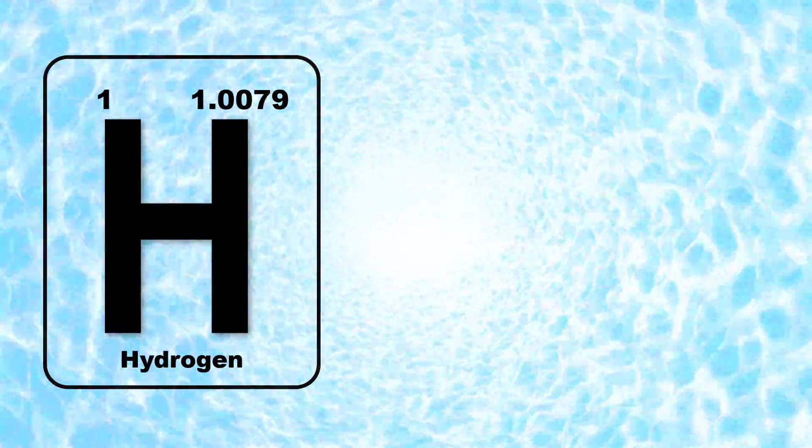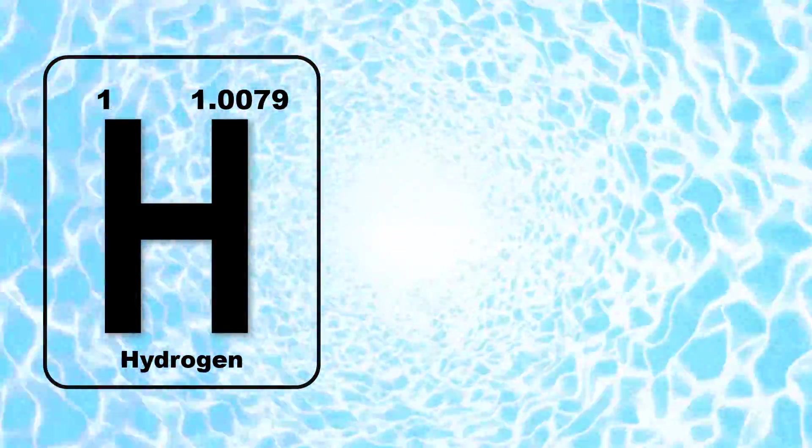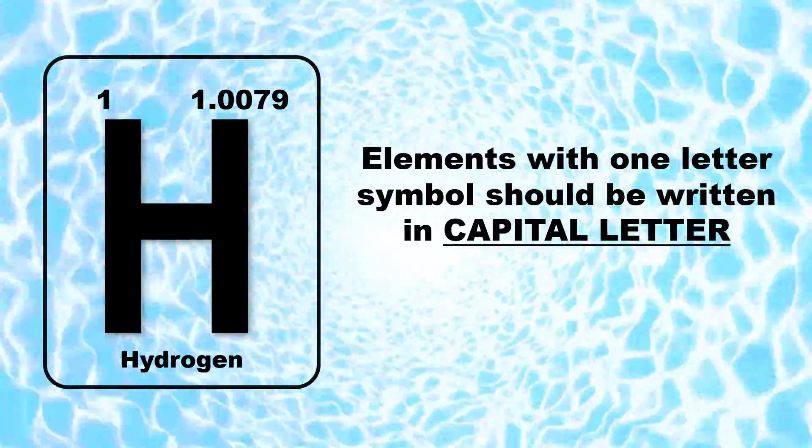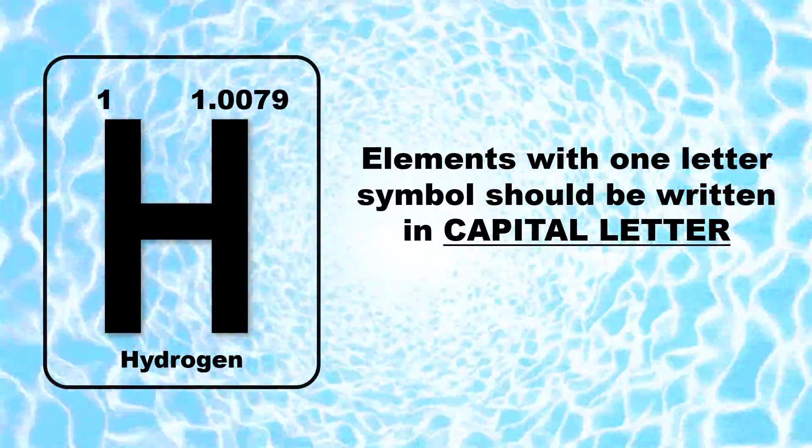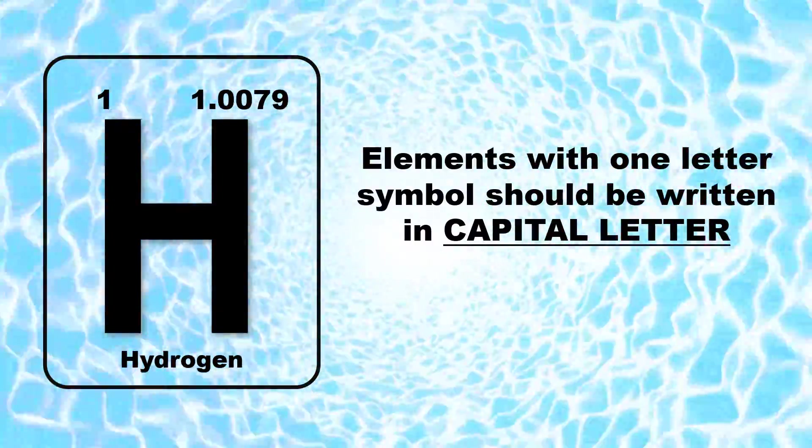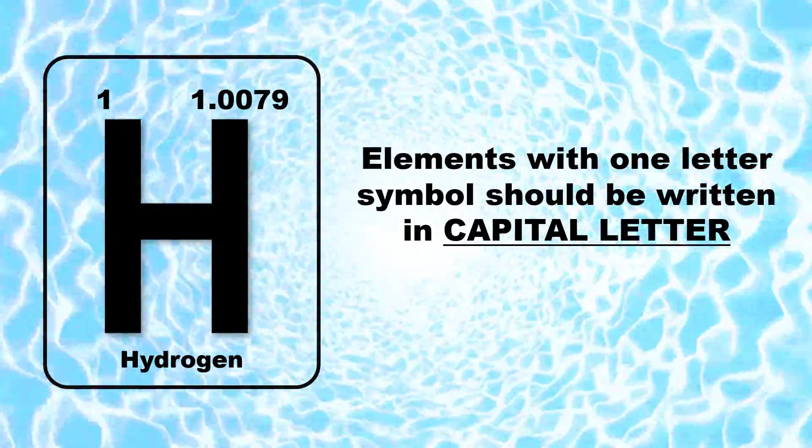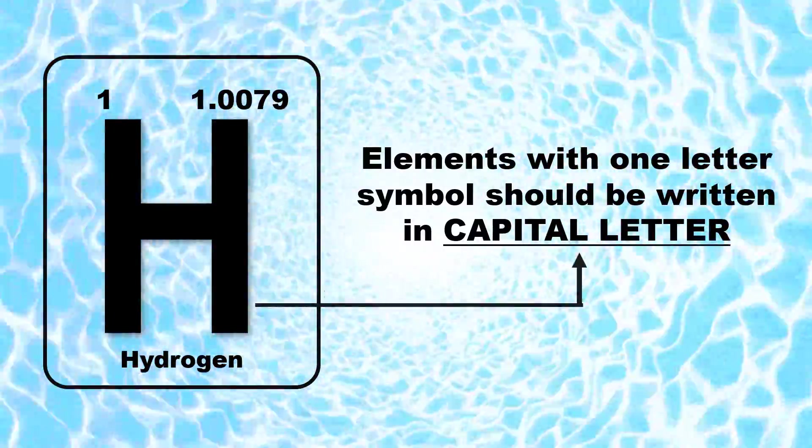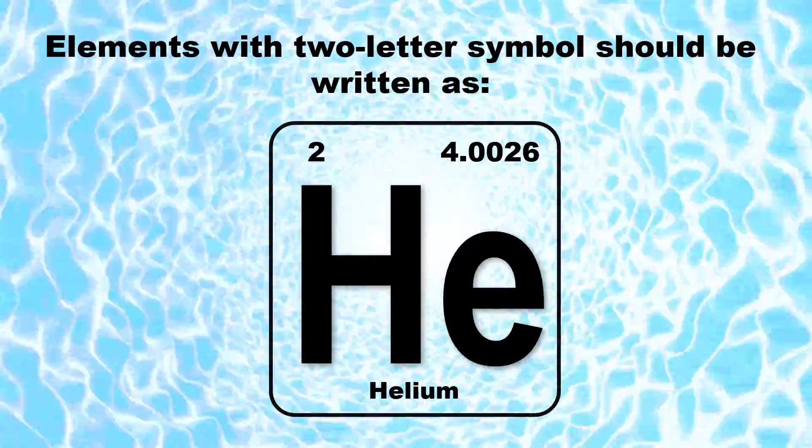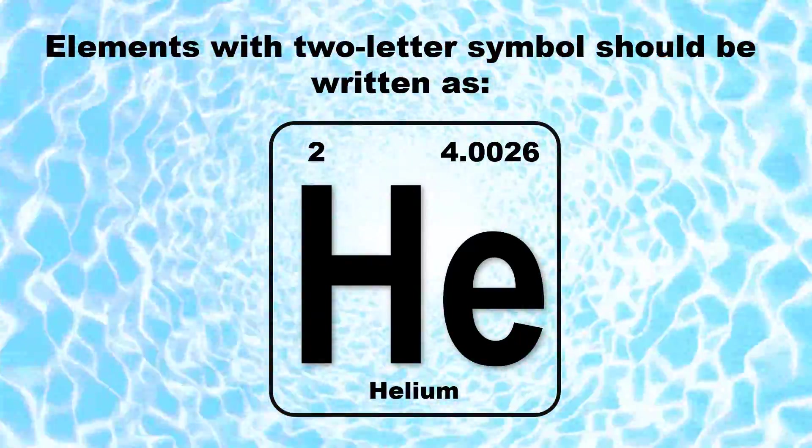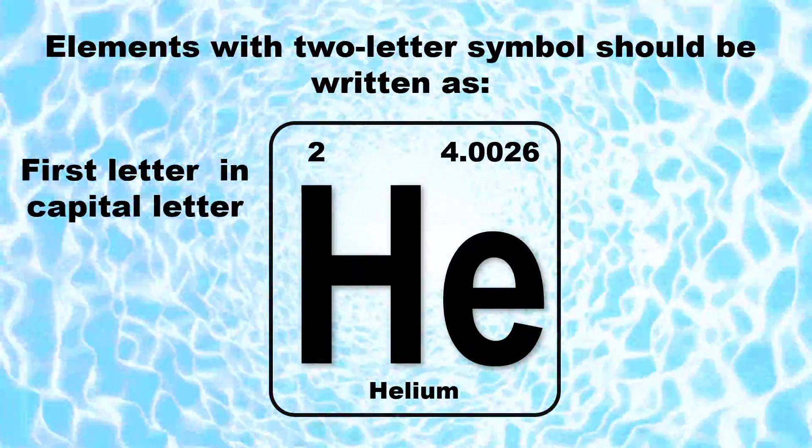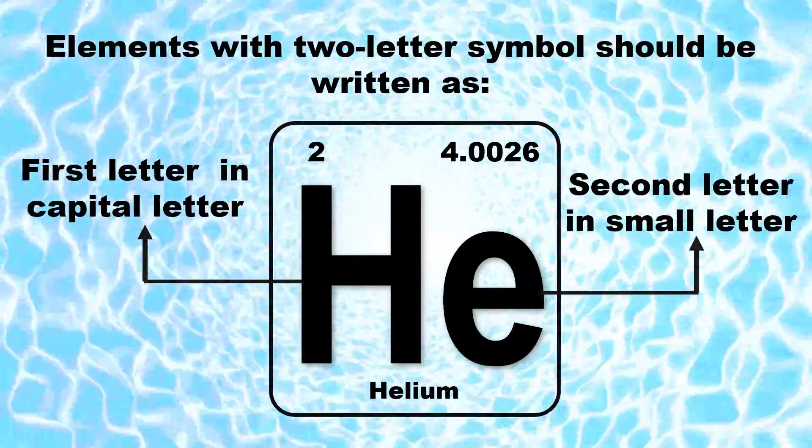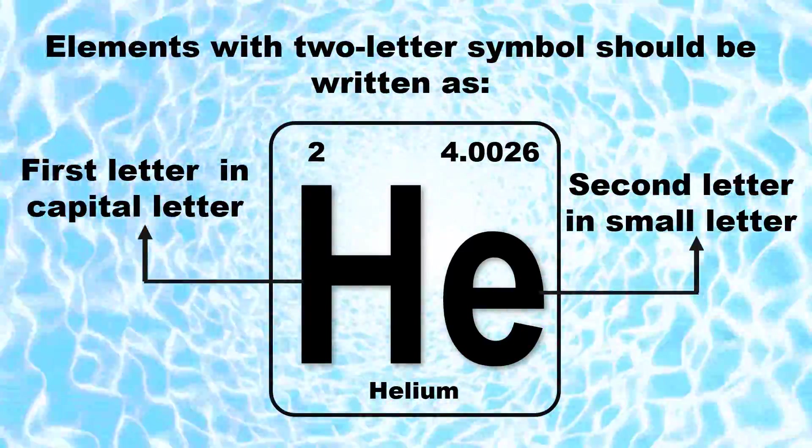Finally, in writing the symbol of an element, there are rules to be followed. Elements with one letter symbol should be written in capital letter just like this one, the hydrogen. Capital letter H is its symbol. Elements with two letter symbol should be written in capital letter, and the second letter should be written in small letter.